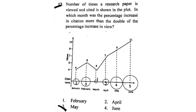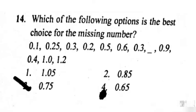This question is about finding which month the percentage increase in citation was more than double the percentage increase in views. The right option is the month of May, option number 3.